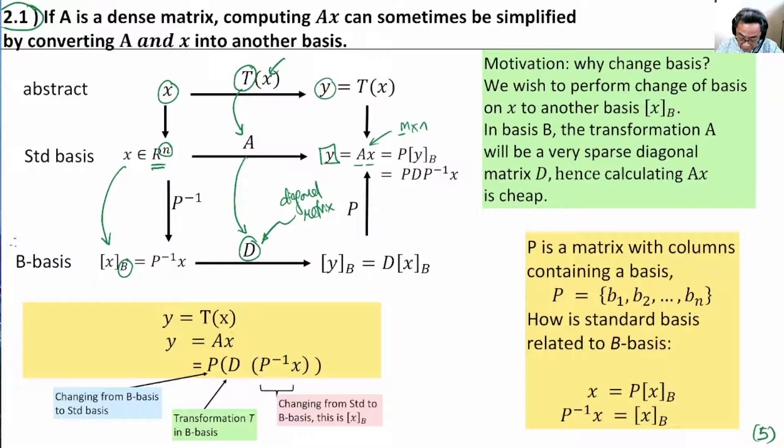So, in this basis, let's call this X of B. D multiplied by X of B is Y of B, the output Y in the B basis. This is the equation showing this fact. Y_B is equal to the operation D times X of B.